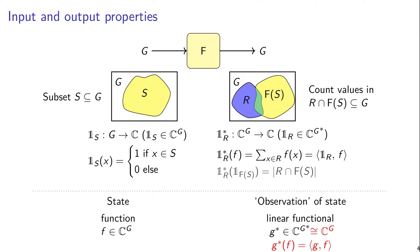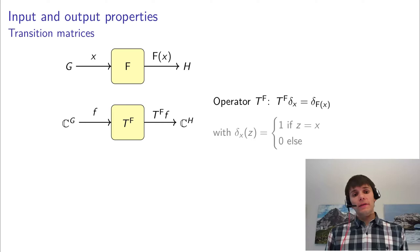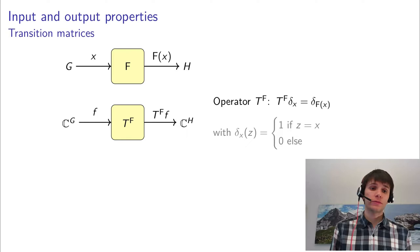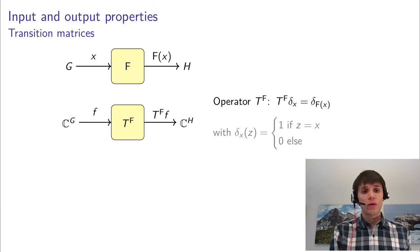Something else that we need, of course, is to know how certain properties — an input property — transform when we apply a certain function. This just means that we need to track how every value in this collection is mapped to another value, and we need to keep track of what weight was assigned.